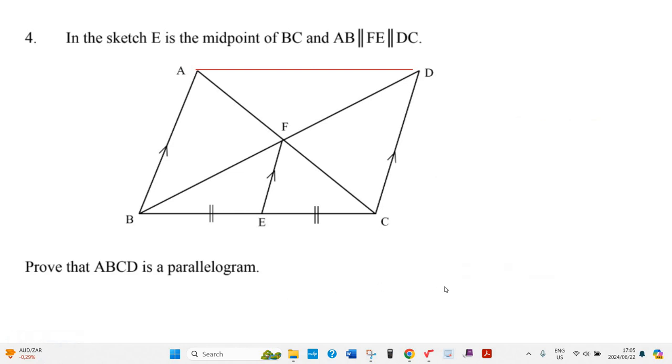Okay, let's try this question. In the sketch, E is the midpoint of BC, and AB is parallel to FE and parallel to DC. There's the three parallel lines, and this is right in the middle, so BE equals EC.